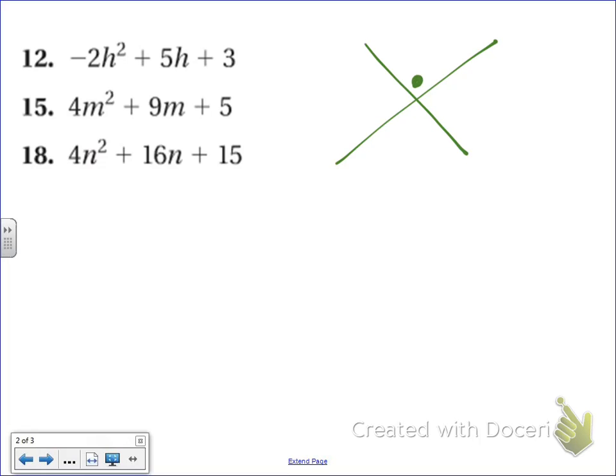Let's go ahead and make my x-factor chart. Again, we need the number that we're going to multiply on top and the number that we're going to add on the bottom. The way we get the number on top is by multiplying a times c. So in this case, negative 2 times positive 3 equals negative 6. And the number that goes on the bottom is b, or in this case, positive 5.